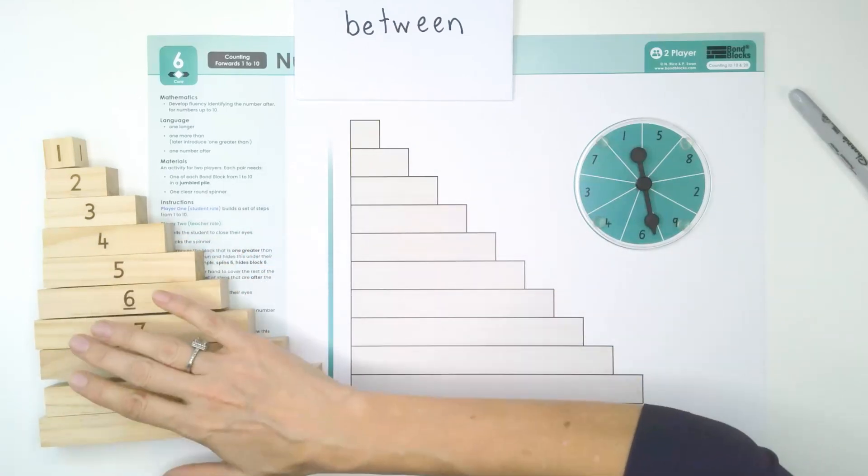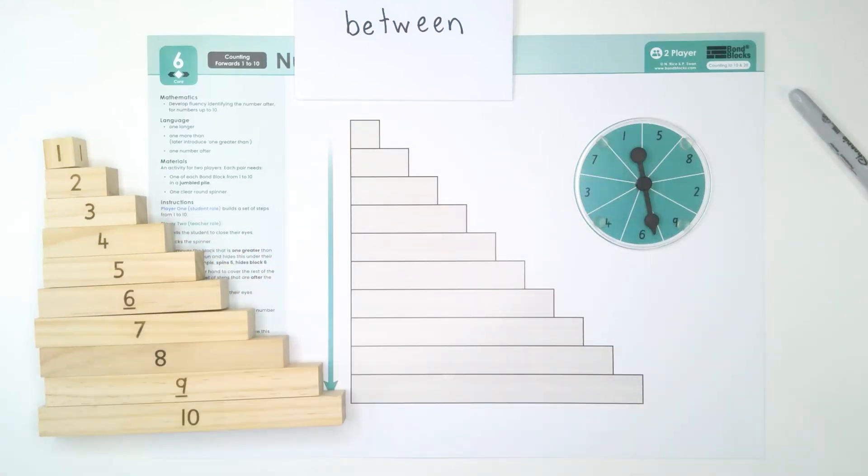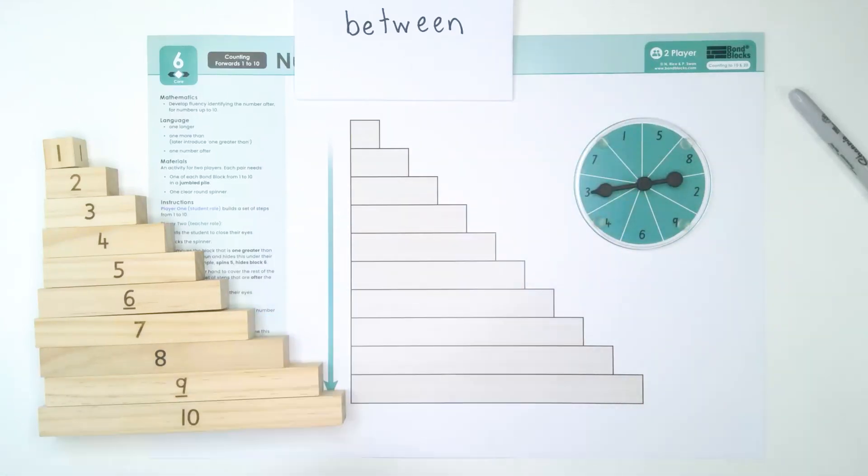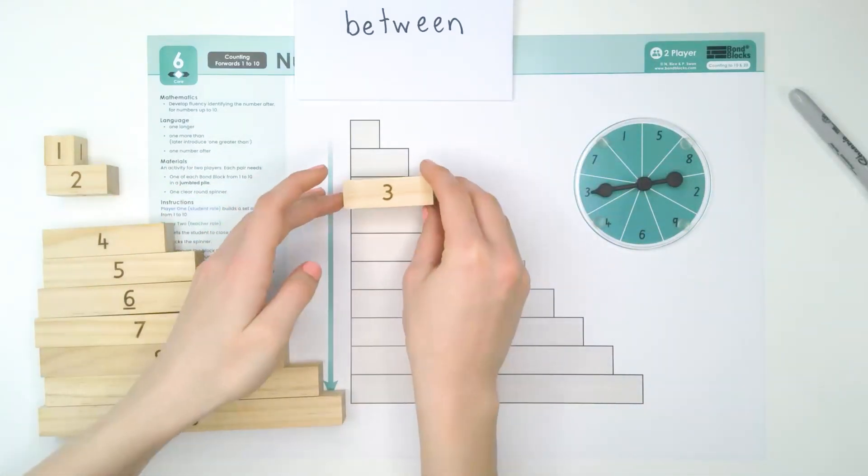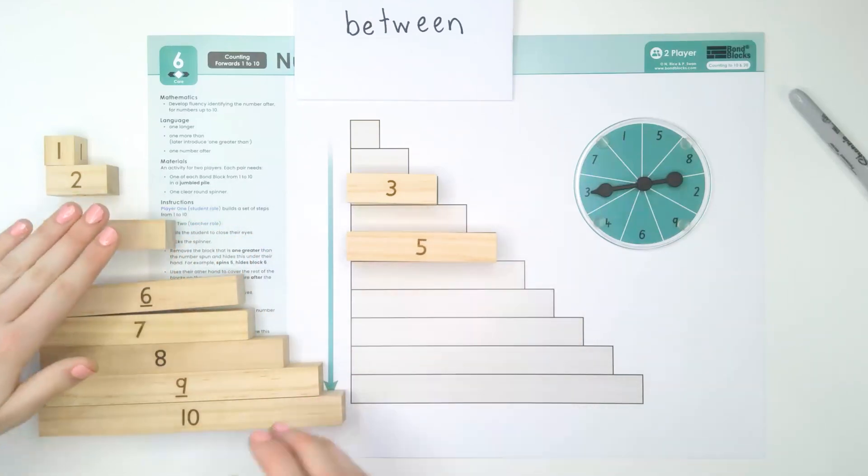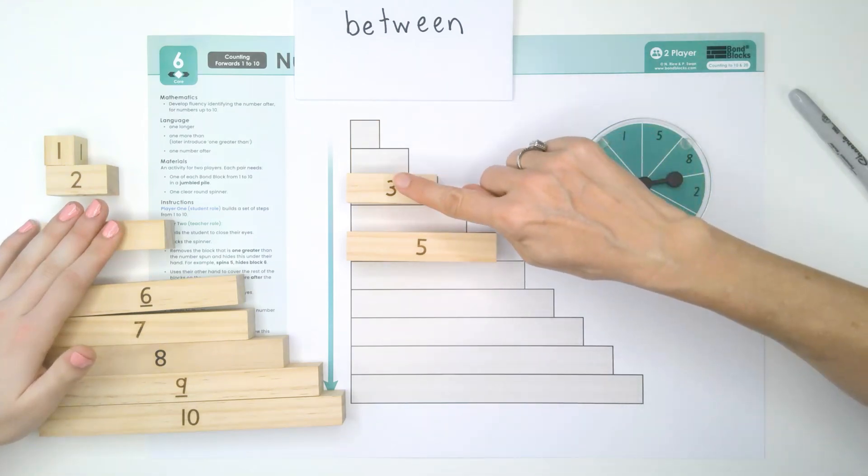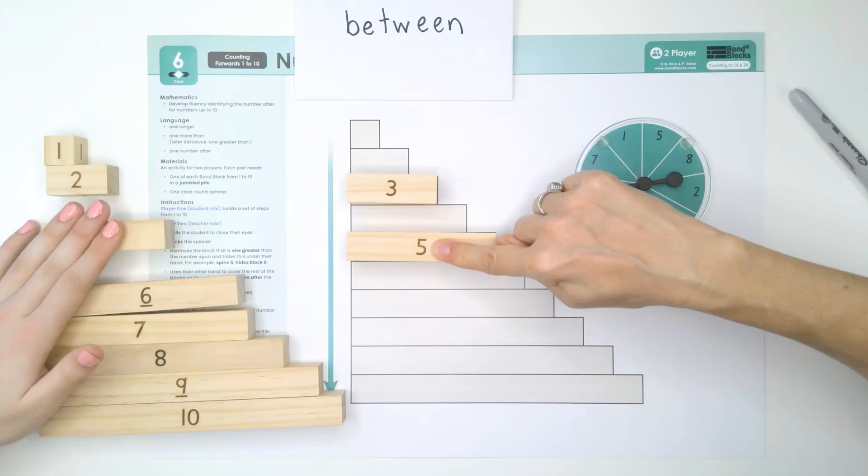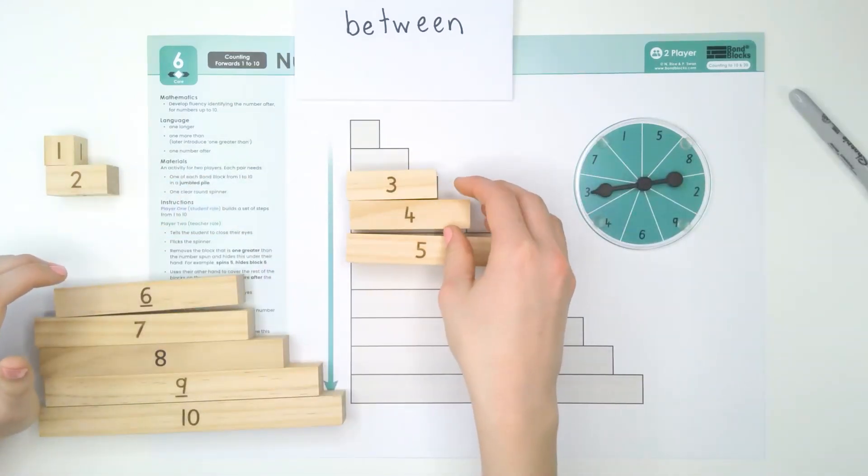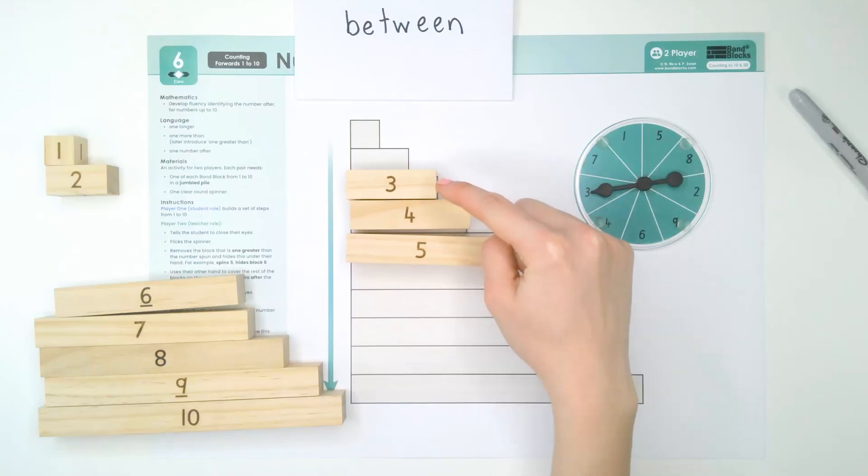Okay. So, I'll close my eyes and you spin. Great. You place that block and the block that is two more. Okay. Now, you're going to open your eyes. Between three and five is four. Yes. Between three and five is four. Well done.